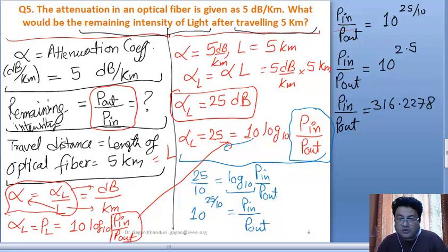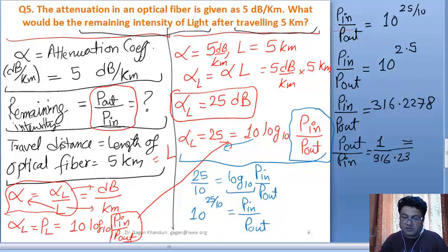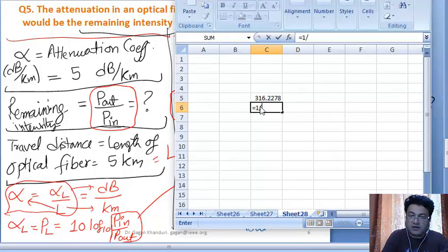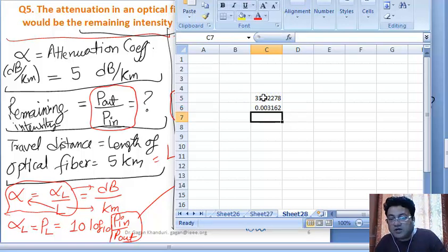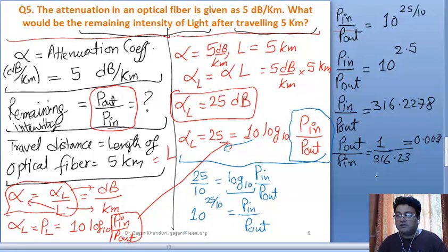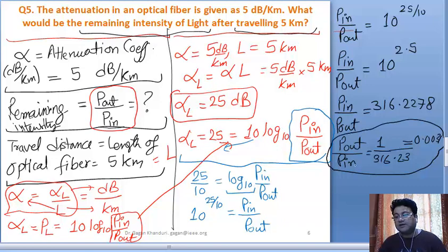But our question asked for P_out by P_in, so I have to write it as 1 by 316.23. Let me use Excel again. This equals 0.0031. So this is my answer. This is the intensity that remains: 0.0031. Thank you for watching.